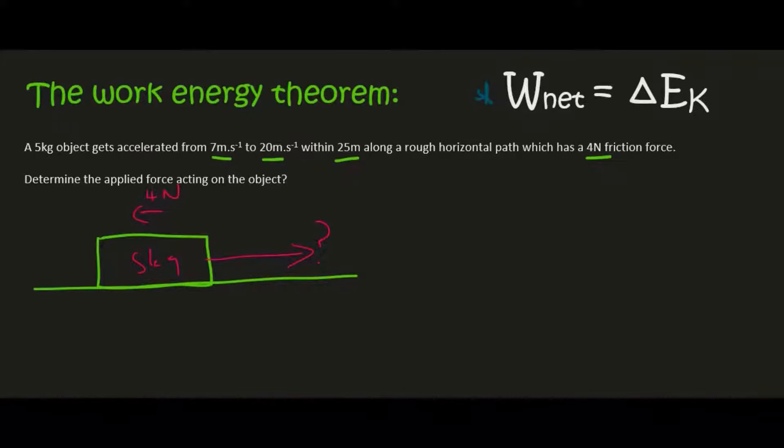The work energy theorem is the same as using what we did in grade 11. In grade 11 you would typically use F_net equals ma and then you would use this formula over here. Both of which are on your formula sheet. That's your equations of motion. These two combined is the same as just using that one.